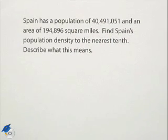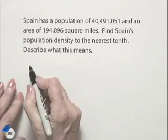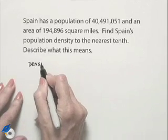Here's an application dealing with the density of people in a particular area. Spain has a population of 40,491,051 and an area of 194,896 square miles. Find Spain's population density to the nearest tenth, and then describe what that means.